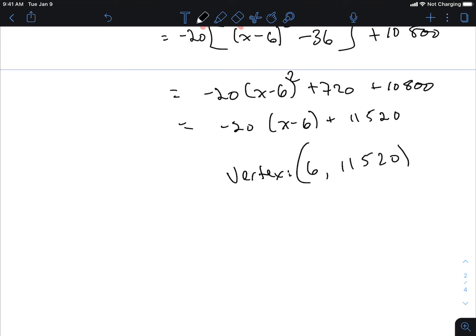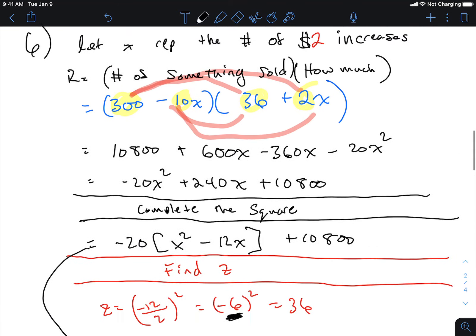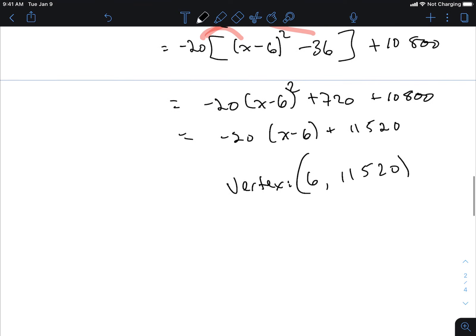How many price increases are we going to have? The x term. Remember we said, if we go back and look at our let statement, what did we say? Let x represent the number of $2 increases. Well, I found the x portion of the vertex to be 6, which means the captain can raise the price 6 times, which turns into $12 price increase.